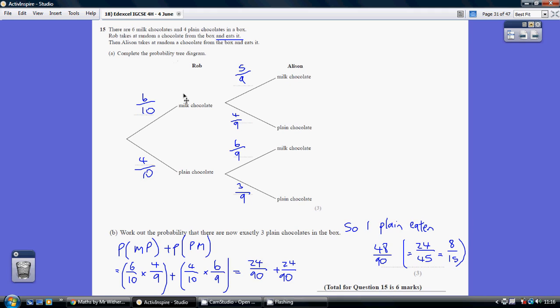So the chances of eating a milk chocolate is 6 out of 10. 10 coming from 6 plus 4 equals 10. So the chances of a milk chocolate is 6 out of 10, and the chance of Rob eating a plain chocolate is obviously 4 out of 10.